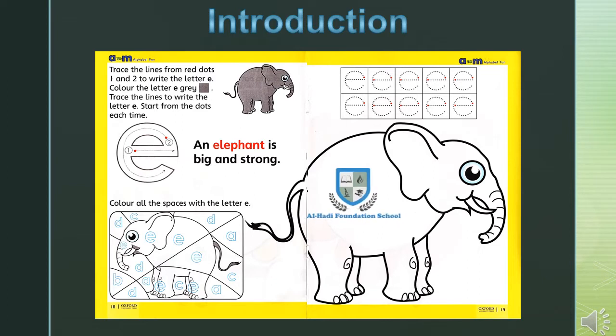Letter E is the fifth letter of English alphabet and comes after letter D.